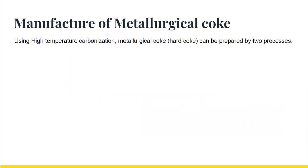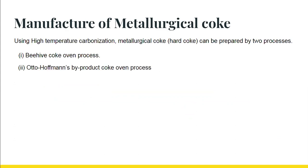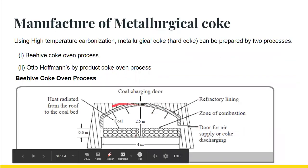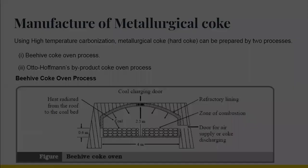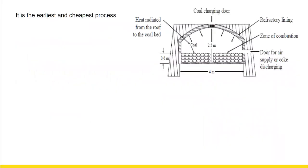By using high temperature carbonization, metallurgical coke can be prepared by two processes: the Beehive Coke Oven process and Otto Hoffmann's Byproduct Coke Oven process. The Beehive Coke Oven is the earliest and cheapest process, and the quality of coke produced by this process is very good.